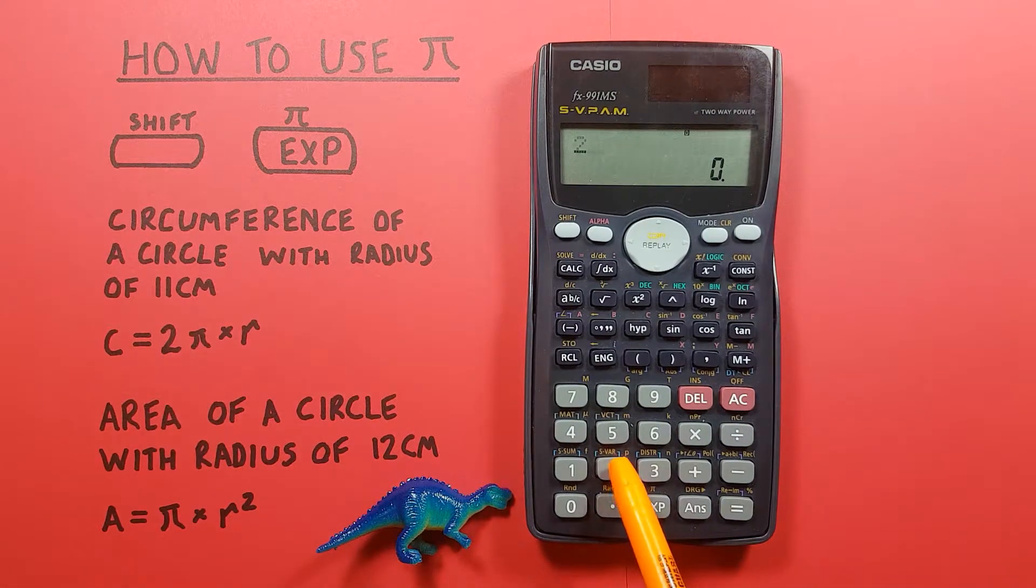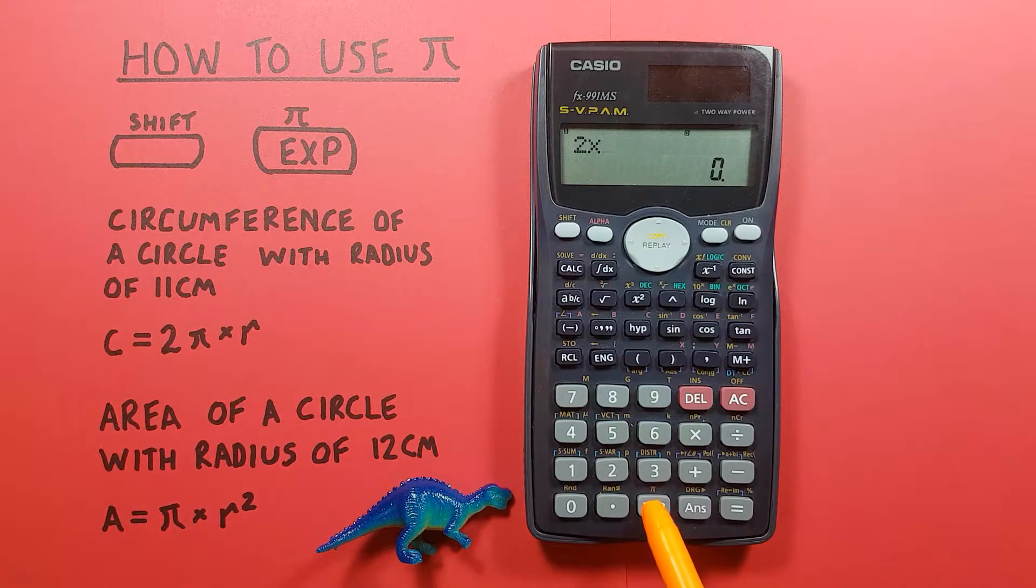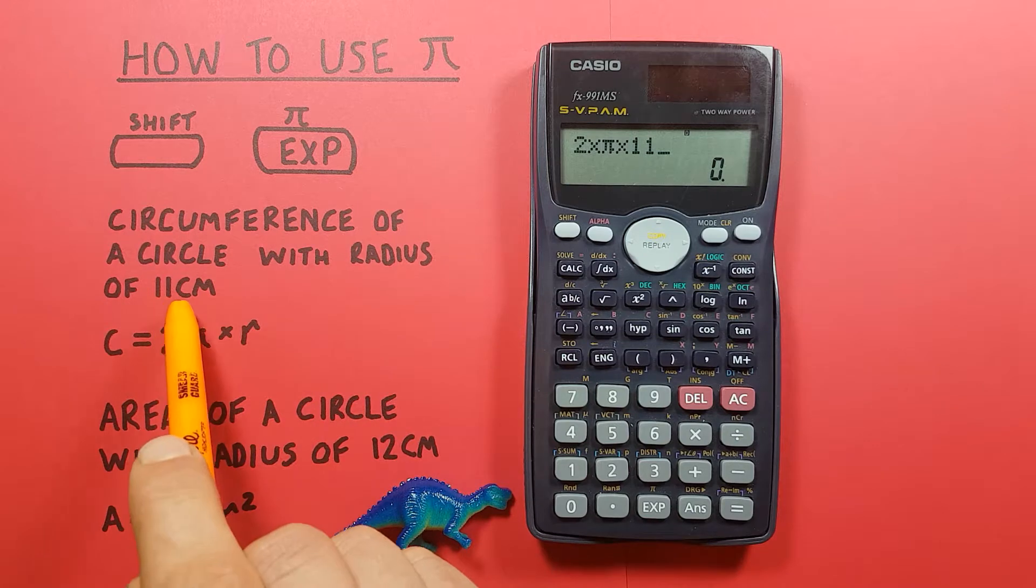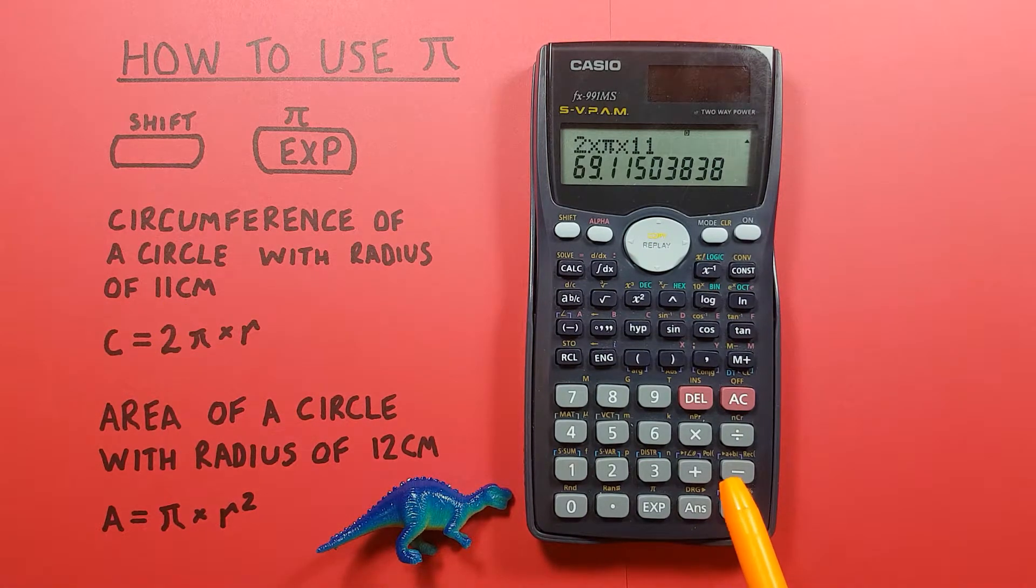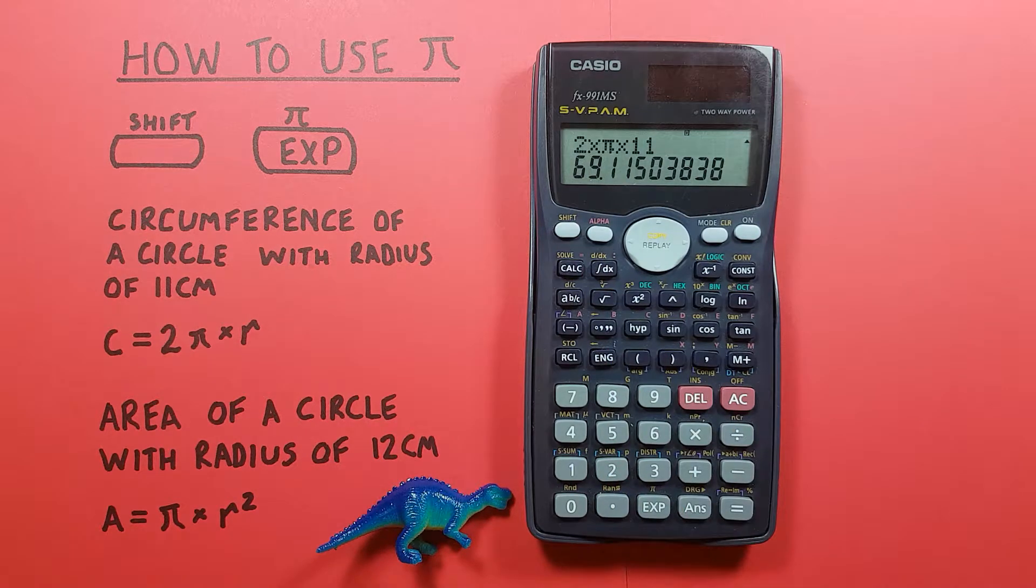We can enter it as 2 times shift PI, there's the PI on the screen, times our 11 equals and we see we get a circumference of 69.115.